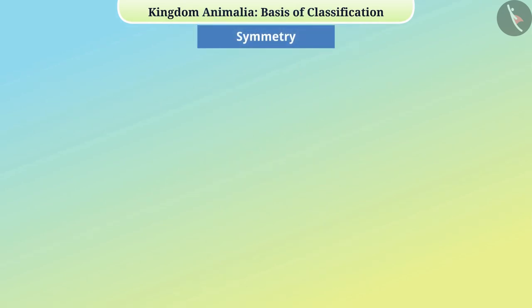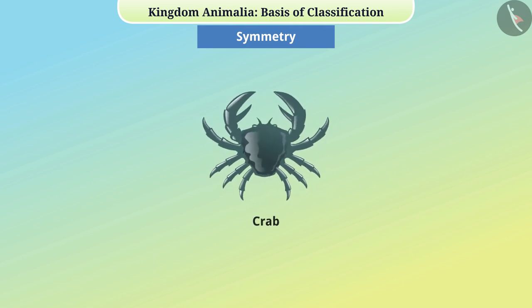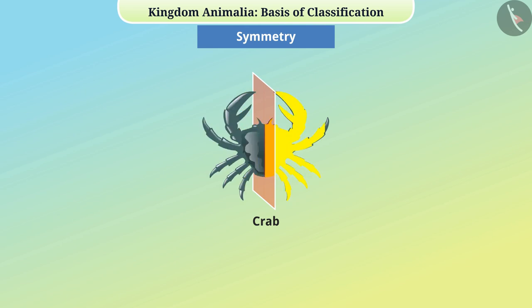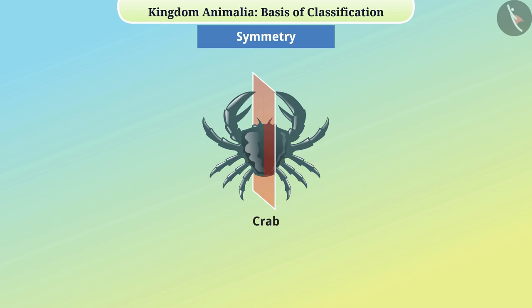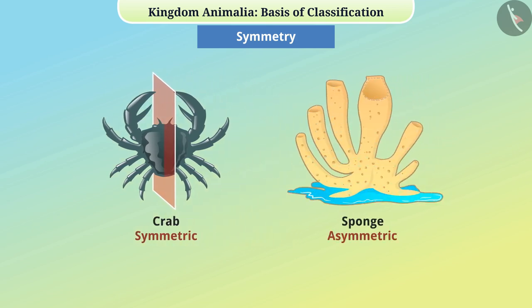Symmetry: Some animals such as the body of a crab can be divided into two parts in a plane such that the two parts are exactly like each other — such animals are called symmetric. Some animals like sponges are asymmetric.